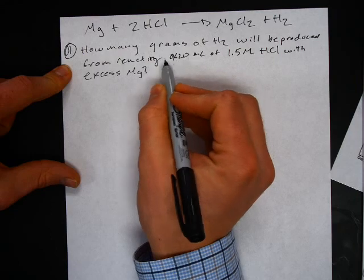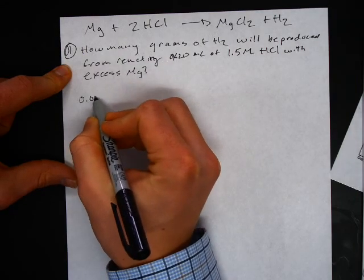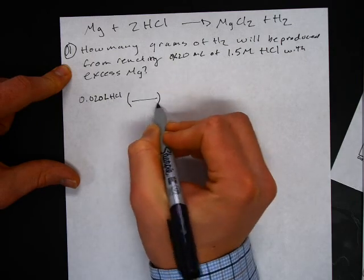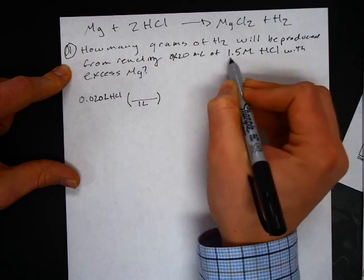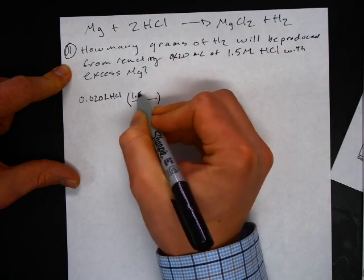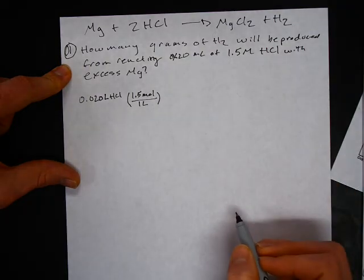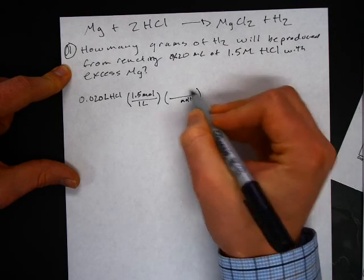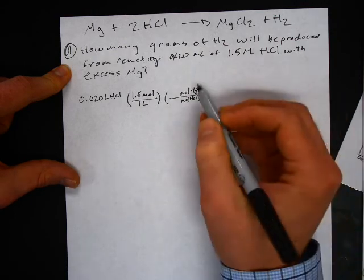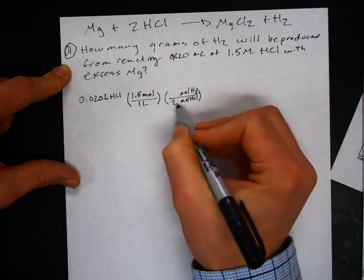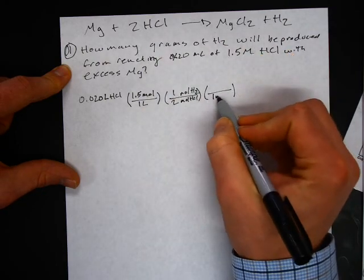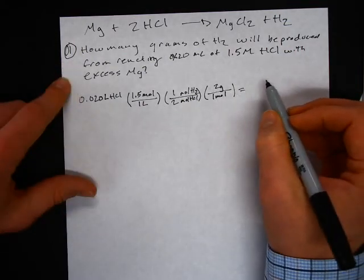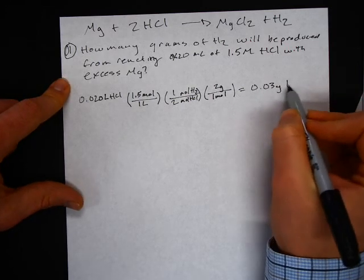Converting to liters — moving the decimal three places left — gives 0.020 liters of hydrochloric acid. Since it's 1.5 molar, that's 1.5 moles per liter. Then I convert from moles of HCl to moles of hydrogen, which is a 2 to 1 ratio. Then I use the molar mass ratio: each mole of hydrogen gas has a mass of 2 grams. Calculating that out, you'd find 0.03 grams of hydrogen.